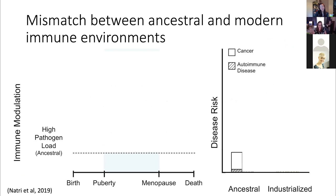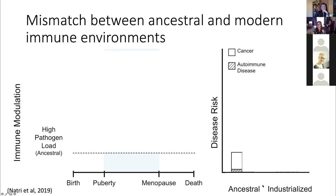I'm going to talk a little bit about theory first, then dig into the genetics and bioinformatics. One of the most important things when doing bioinformatics and genomics work is making sure we have a good hypothesis and framework for testing it. You can run software on anything and get results, but without a framework, it can be difficult to discern what those results mean. So I want to start with the general concept of immune modulation, comparing ancestral human populations to very recent industrialized populations.